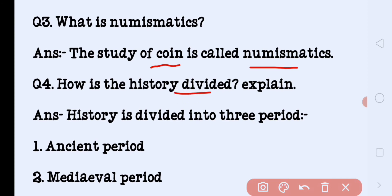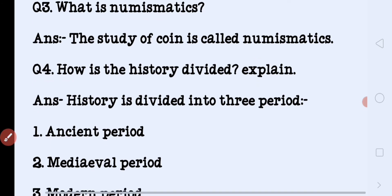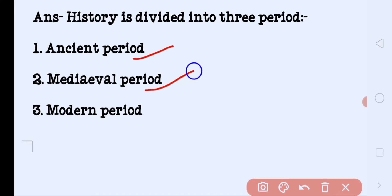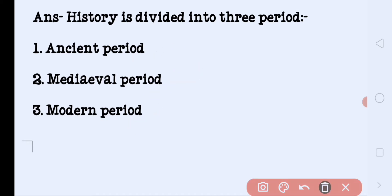How is history divided? History is divided into three parts: ancient period, medieval period, and the modern period.